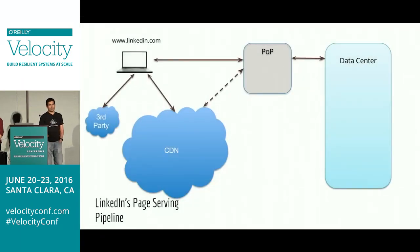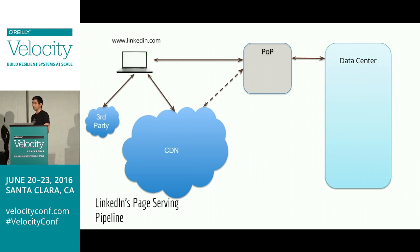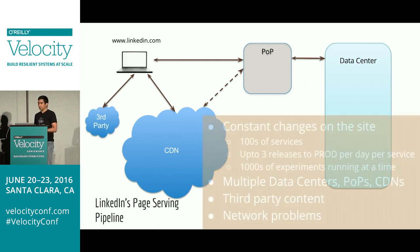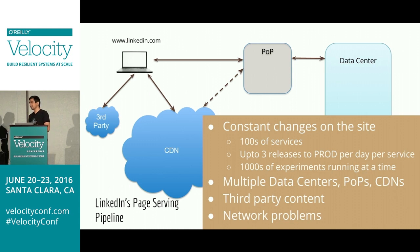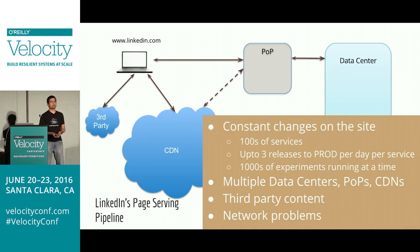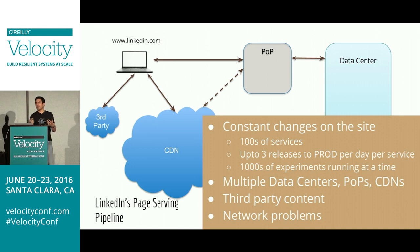Why do these latency leaks happen? When a user accesses LinkedIn.com, the TCP and SSL sessions are terminated at the POP. POP then talks to our data center to fetch dynamic content, which is pushed to the user. Static content — JavaScript, CSS, images — is served from CDNs, and there's some third-party content too. Leaks happen because there are constant changes at the data center: hundreds of services, some released up to three times a day to production, and thousands of experiments running at any given time. We also have multiple data centers, multiple POPs, multiple CDNs across the globe, third-party content, and network problems happen all the time.